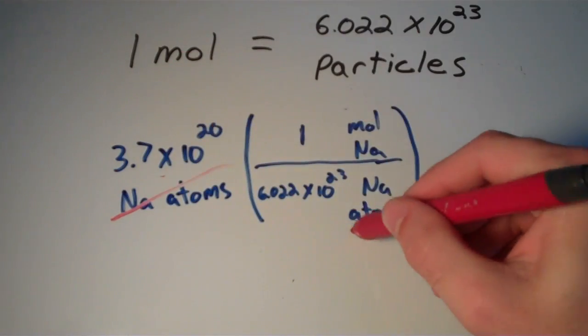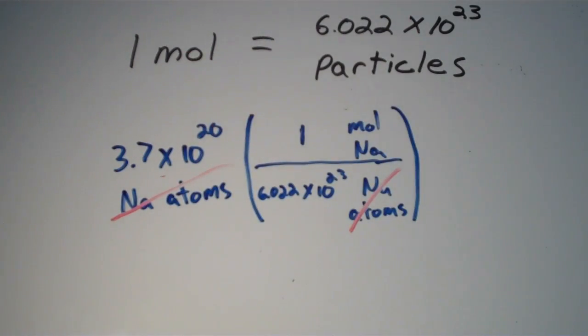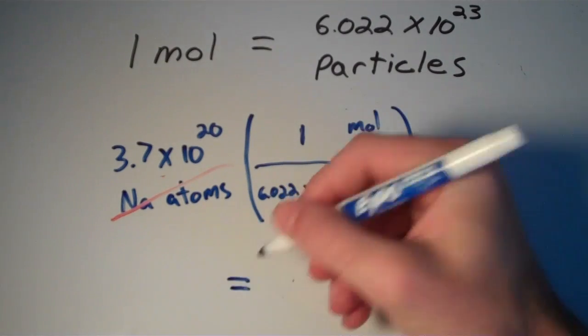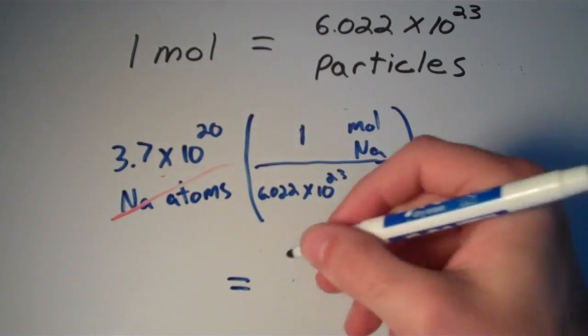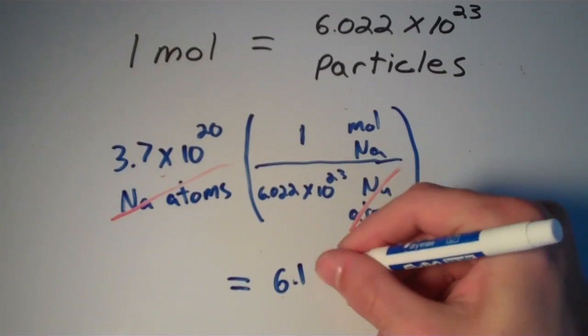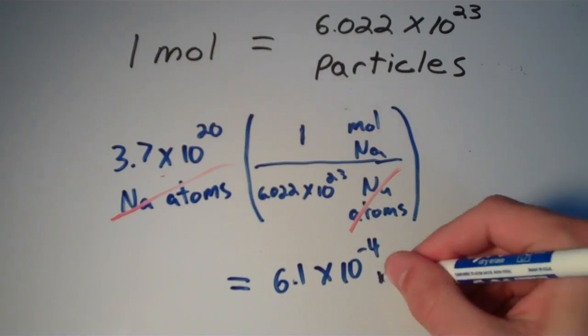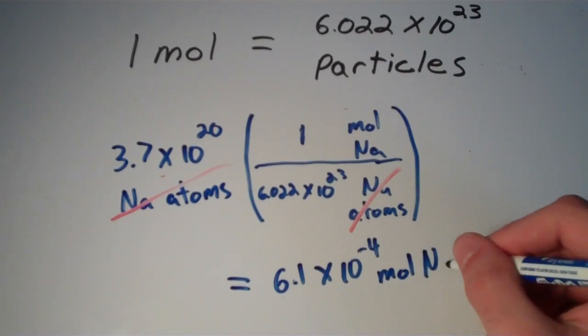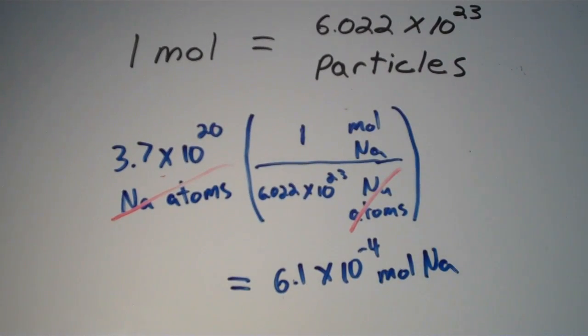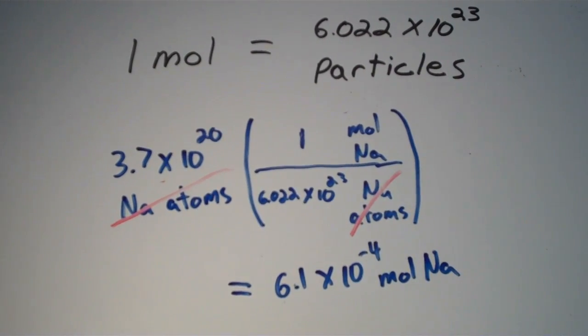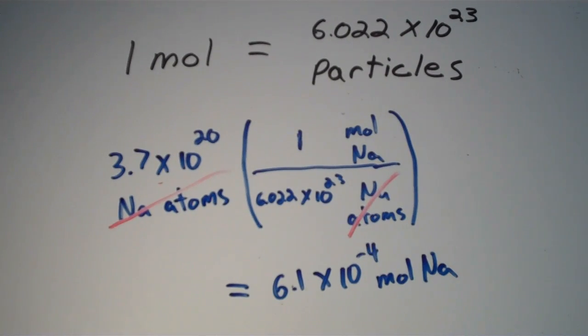Sodium atoms cancels with sodium atoms, and that leaves us with 6.1 times 10 to the negative 4th moles of sodium. So there you go. That's how to go back and forth between moles and particles.